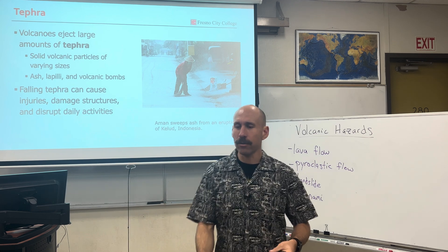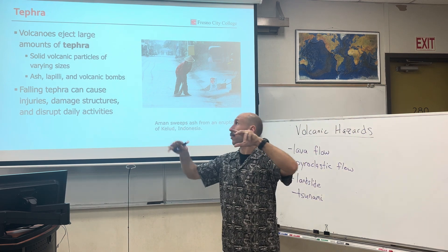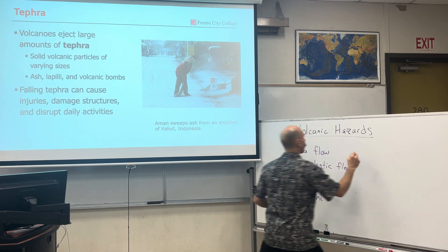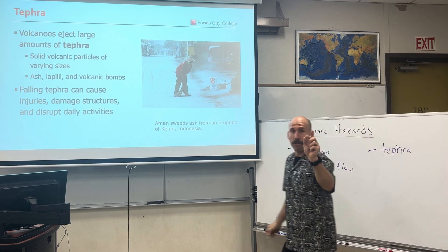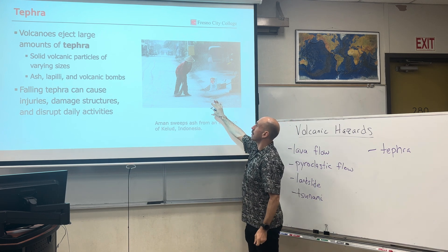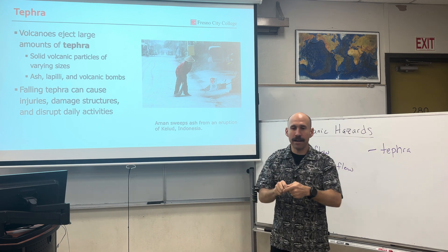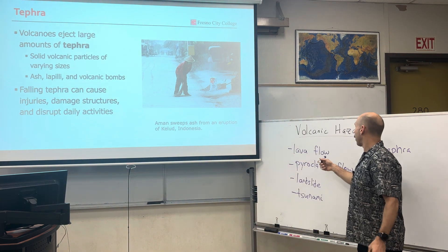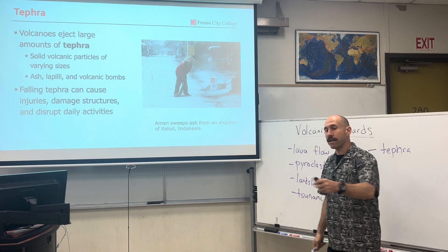When a volcano erupts, it erupts lava, gas, ash, blocks, and rocks into the air. All of the material ejected into the air is known as tephra. Tephra can have small particles that get into your lungs — that's hazardous. It can also pile up on top of structures in such quantities that it causes roofs to cave in and buildings to collapse. So not only do we worry about explosions, lava, landslides, and tsunamis, but also the ash in the air can cause pretty serious effects.